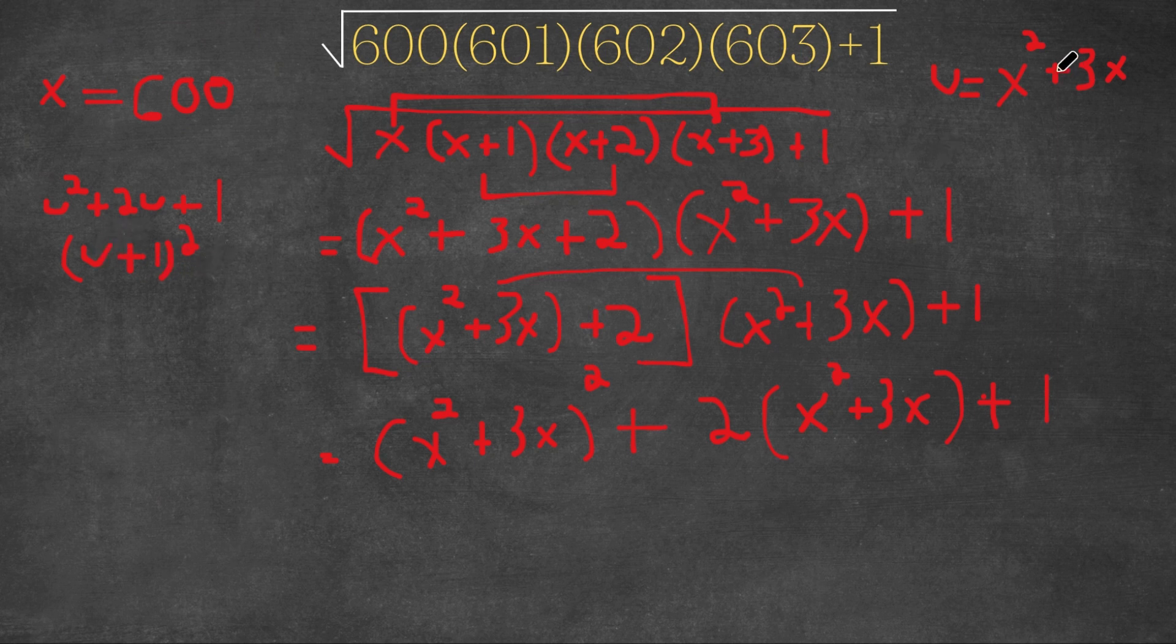So now, because we already know that u is equal to x squared plus 3x, well, let's fill in x squared plus 3x for u. So this would result in x squared plus 3x plus 1 squared.